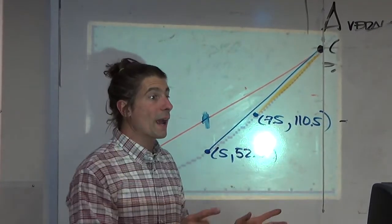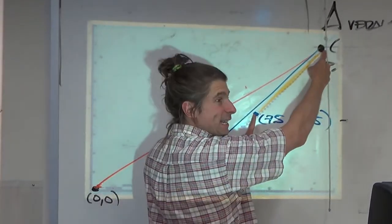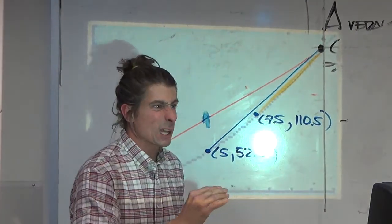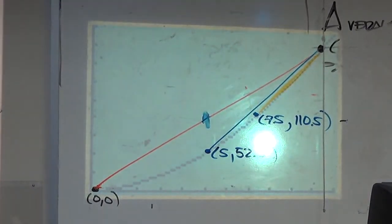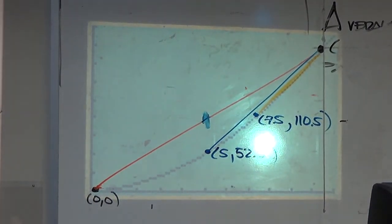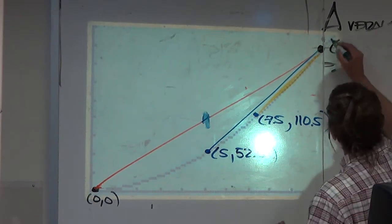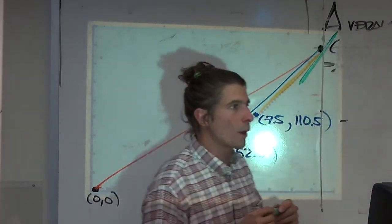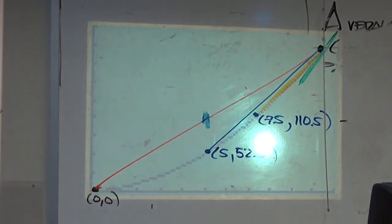So, and why is it a secant? How many points connected? Two. What we really want, what we really want and we can't get it directly is we want, I didn't use green here, we want the line that's right here that only hits that one point. That line is called a tangent line.